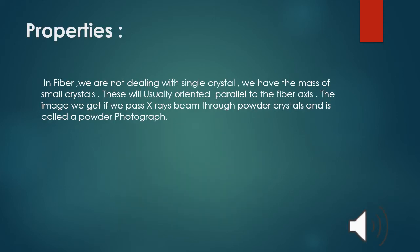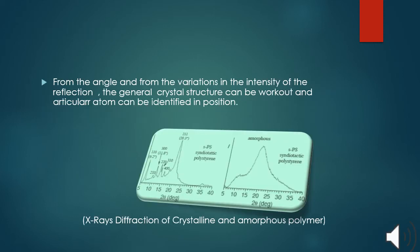Properties. In fiber, we are not dealing with single crystal. We have a mass of small crystals. These will usually orient parallel to the fiber axis. The image we get if we pass X-ray beam through powder crystal is called a powder photograph. X-ray diffraction of crystalline and amorphous polymer - from the angle and from the variation in the intensity of the reflection, the general crystal structure can be worked out and particular atom can be identified in position. The two pictures contain the amorphous and crystalline polymer having different wavelengths.